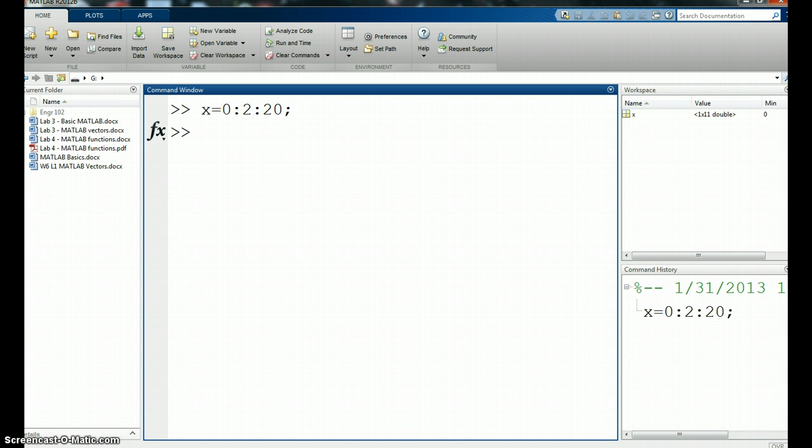I need some y values corresponding to those, so I'll say y equals x squared. Let's do a parabola. Notice I need the dot power because I'm not doing vector multiplication, just element by element. So now I have two vectors, same size, and they're basically just a list of x and y.